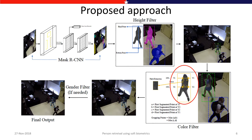After height filtering, the next filter is the torso color filter. As shown by the red circle, a precise torso patch is extracted using the semantic boundary around the person, where y1 and y2 lines are at 20 percent and 50 percent from the top of the bounding box respectively, and region ABCD is the patch used for torso color identification. The color is classified using a color model trained on different color patches. If two persons share the same height and torso color but differ in gender, the gender filter further reduces the search space. This linear filter approach uses height, torso color, and gender as soft biometrics.